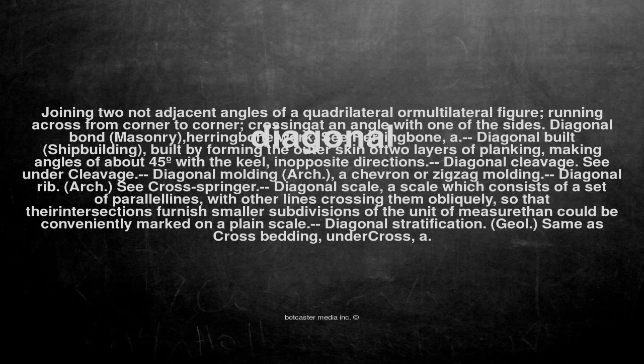Arch: see cross springer. Diagonal scale: a scale which consists of a set of parallel lines with other lines crossing them obliquely, so that their intersections furnish smaller subdivisions of the unit of measure that could be conveniently marked on a plane scale. Diagonal stratification, geology: same as cross bedding, under cross.